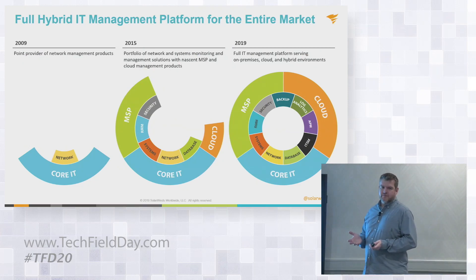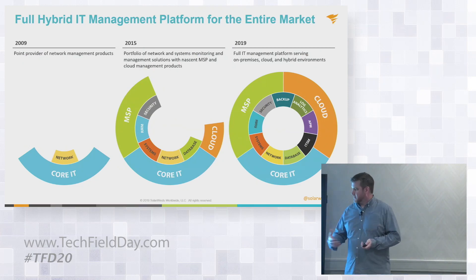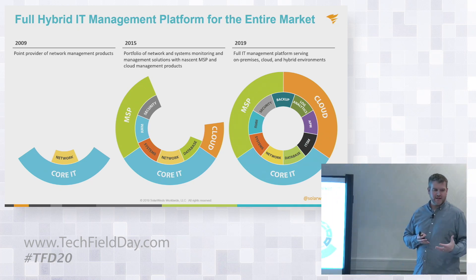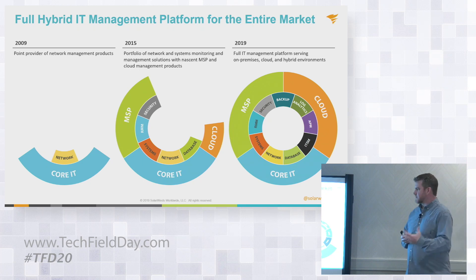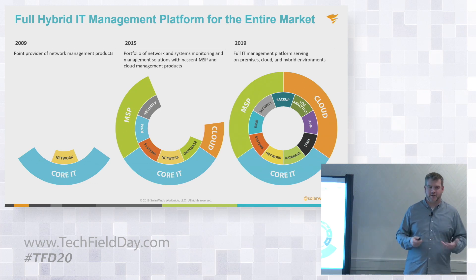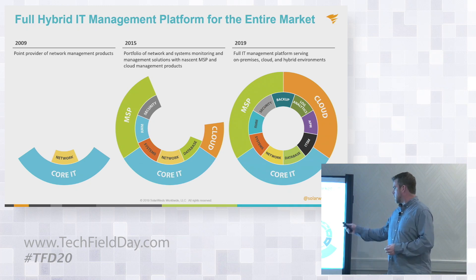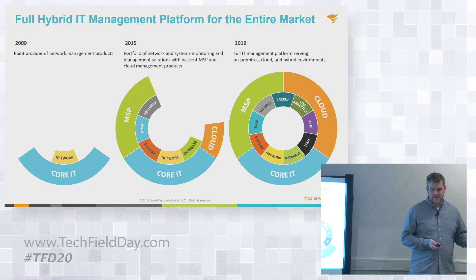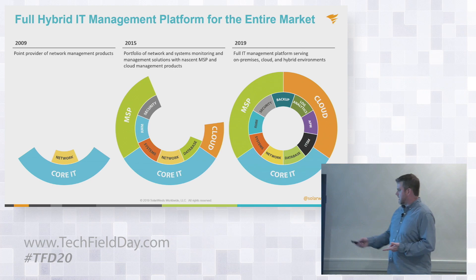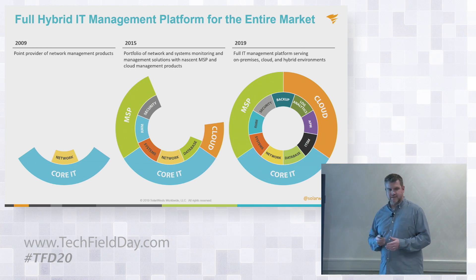We're known as network monitoring because that's where we started, originating in 1999. We originally came out with a whole set of tools — starting with network management, then moving out into 2015 where we introduced systems management capabilities, database, security, and so on. We have three core businesses: tools for MSPs, tools for cloud and modern app monitoring, and then our traditional core IT. I'll cover some of the scenarios today about how we use visualization.